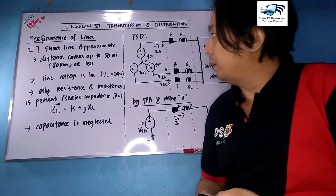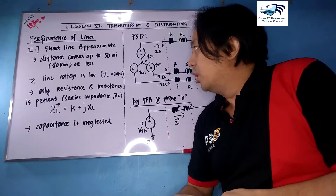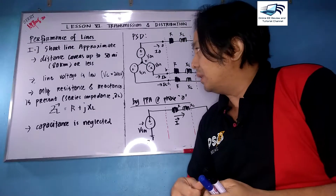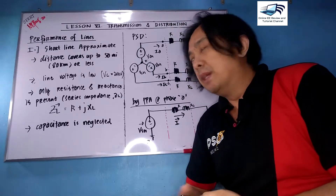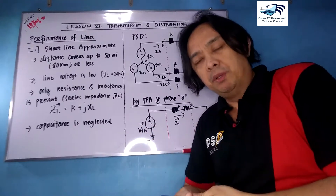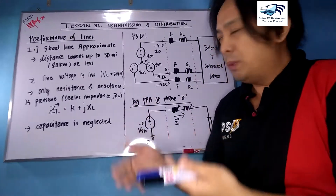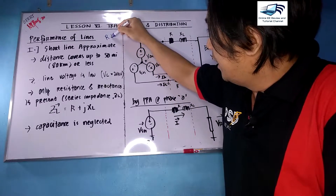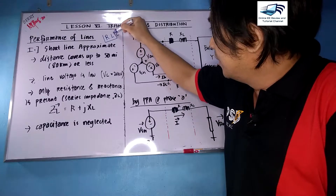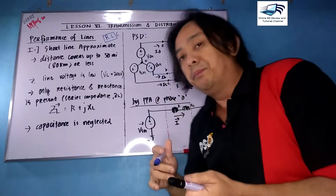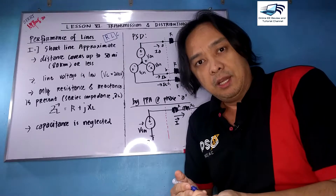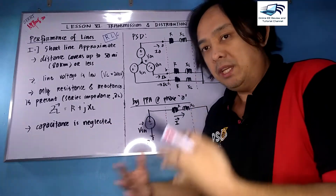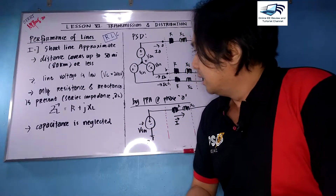The short line approximate has a distance of 50 miles or 80 km or less. The shorter the line, the more negligible the effect of the capacitance. Since we discussed the parameters of the lines — R, L, and C — on a short line approximate we will only concentrate on R and L respectively.